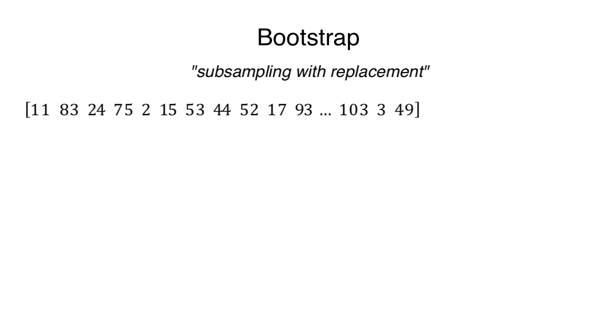Bootstrap. In one line, it's subsampling with replacement. Consider 100 sample integers. You have one goal: find the mean. Normally, we would just sum 100 of these samples and divide the value by the total number of samples, 100. Easy enough.